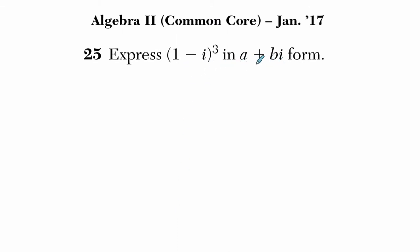We have to express this in a plus bi form. That means take 1 minus i and you can see here the third power, so we want to take it and multiply it three times and then simplify the results so we have a real part a and an imaginary part with bi.